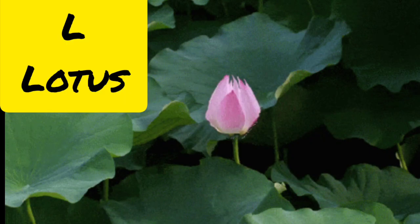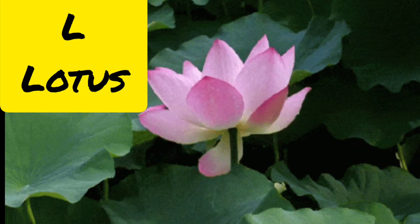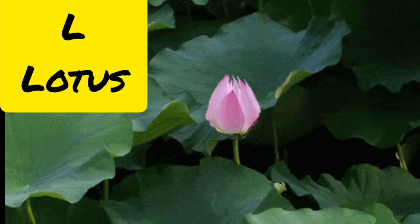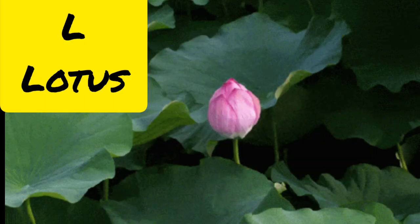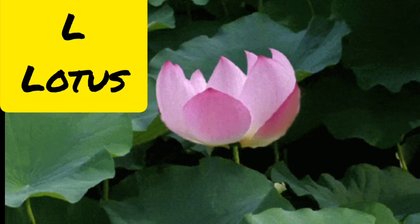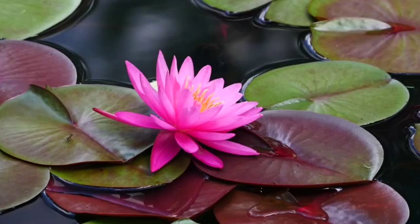The second one is Lotus. L for Lotus. This is Lotus. And you know kids, Lotus is the national flower of the country India. And Lotus grows and floats on water.